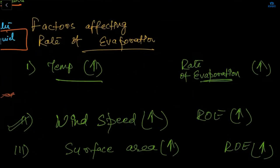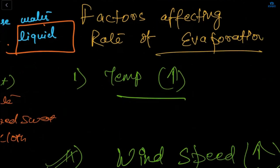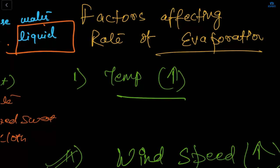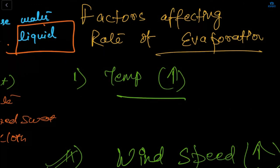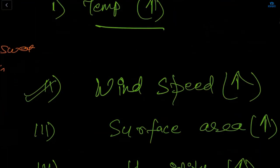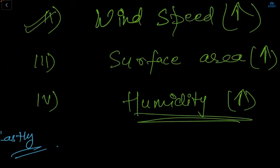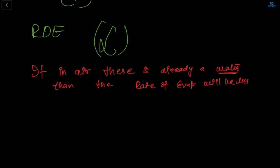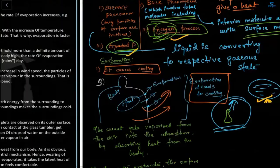Factors affecting the rate of evaporation: if temperature increases, the rate of evaporation increases. If wind speed increases, the rate of evaporation also increases. Regarding humidity — the rate of evaporation decreases in high humidity, because if there is already water in the air, there is less scope for more evaporation.